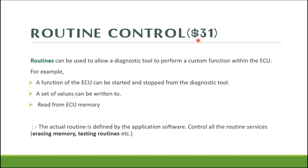Routine control service ID is 31. Routine control can be used to perform some actions in sequence. In the application layer there are a lot of functions written for actuated tests. To activate those functions, the start and stop routines can be used. Also, a set of values can be written and read from ECU memory. Overall, routine control can be used for erasing memory and also testing routines.